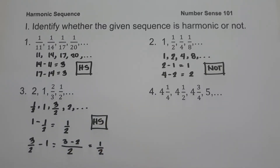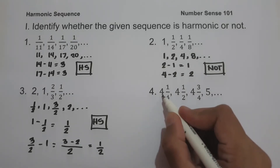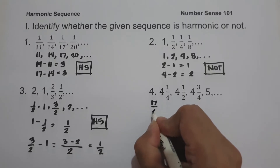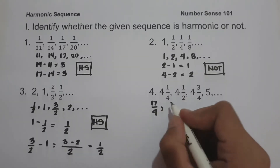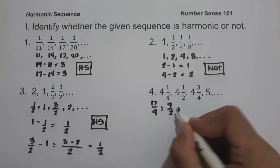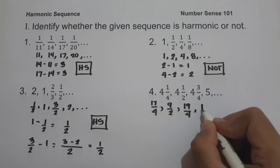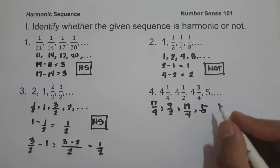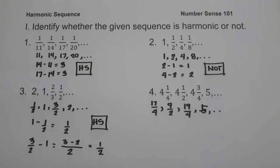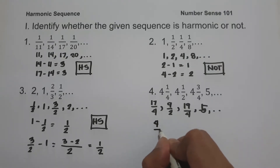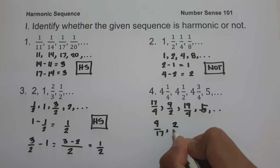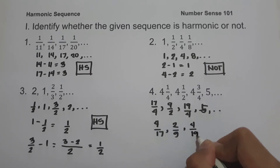On number 4, we have 4 and 1/4, 4 and 1/2, 4 and 3/4, and 5. Since we have mixed numbers, the first thing to do is convert them to improper fractions: 17/4, 9/2, 19/4, and 5. Then the reciprocals are 4/17, 2/9, 4/19, and 1/5.